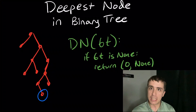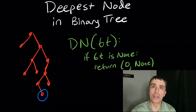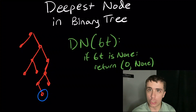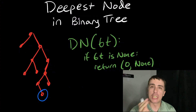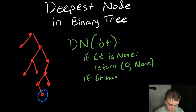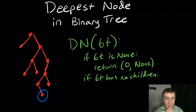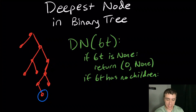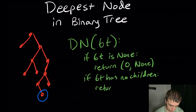At the very end, this will actually be a helper to the real algorithm, so the real algorithm will call this with the root of the tree and then extract the right node. We need to return two parameters because the algorithm needs to know not only what the depth is, but also what the node is. The other case is if bt has no children, which means this is the only node in this particular binary tree. Its depth is one because it's the only node and it is the node, so I'm going to return one and bt itself.